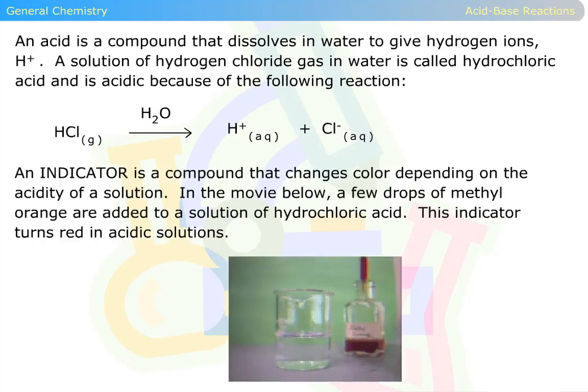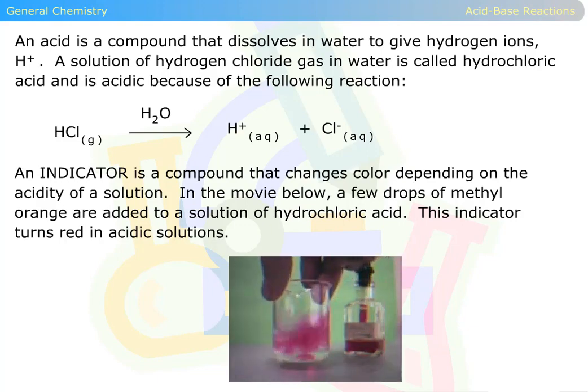An indicator is a compound that changes color depending on the acidity of a solution. In the movie below, a few drops of methyl orange are added to a solution of hydrochloric acid. This indicator turns red in acidic solutions.